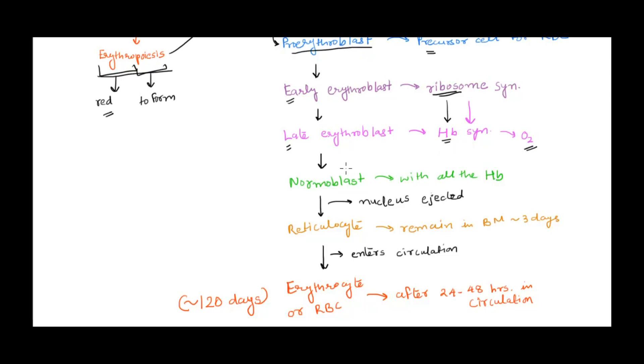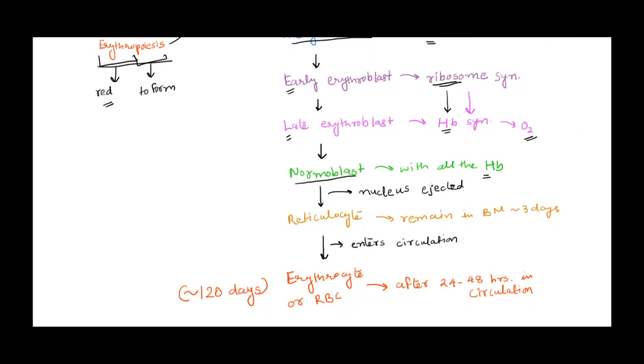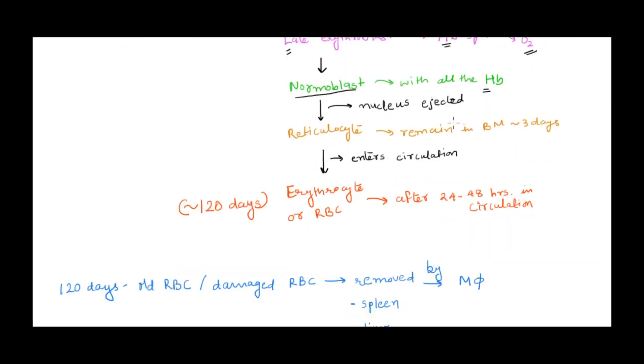Late erythroblast is the stage where lots of hemoglobin is synthesized. When you have a cell containing lots of hemoglobin, it's called normoblast. This is the stage containing all the hemoglobin. At this stage, one very important thing happens - the ejection of nucleus. The nucleus will be removed.